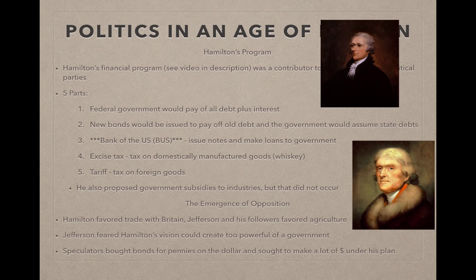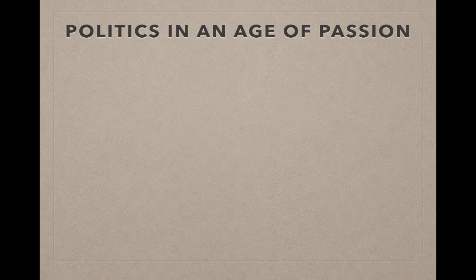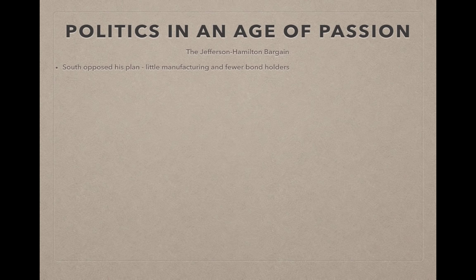Speculators during the Articles of Confederation period bought bonds for pennies on the dollar, and under Hamilton's financial plan the federal government would pay off all debt plus interest — meaning they would make a lot of money. Jefferson and opponents of the plan argued that was unfair, as some rich people would benefit enormously. The South opposed the plan because there was little manufacturing and fewer bond holders.